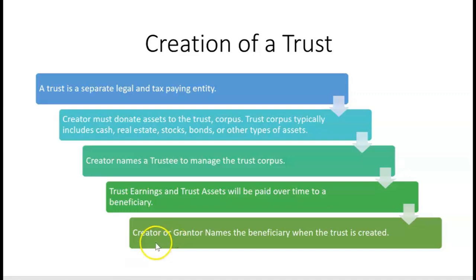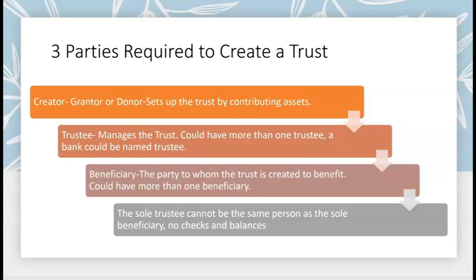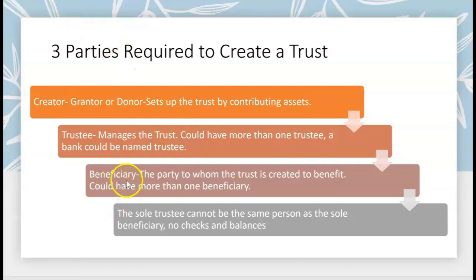The creator, sometimes known as the grantor, will name the beneficiaries when the trust is created. Three parties are required to create a trust: the creator, sometimes known as the grantor or donor, who sets up the trust by contributing assets; the trustee, who manages the trust — you could have more than one trustee, and a bank could be named as trustee; and a beneficiary, the party to whom the trust is created to benefit.